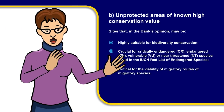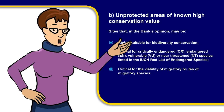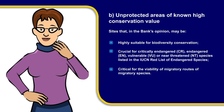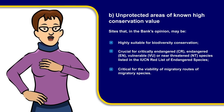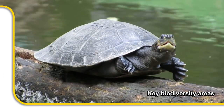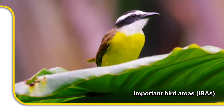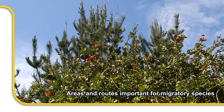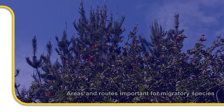It also applies to unprotected areas of known high conservation value. These are sites that have been defined nationally, regionally, and internationally, and include key biodiversity areas, important bird areas, Alliance for Zero Extinction sites, and areas and routes important for migratory species.